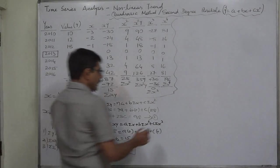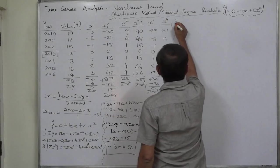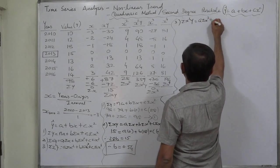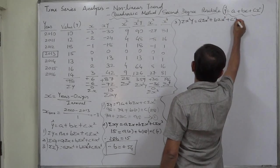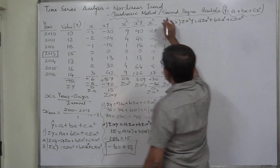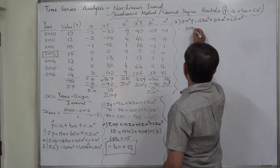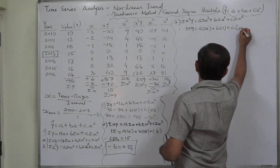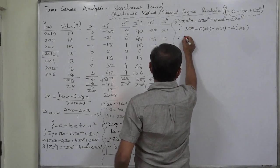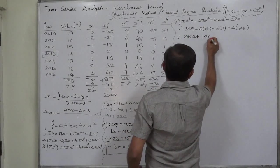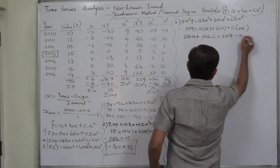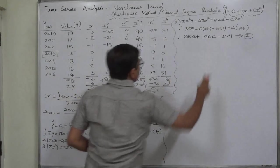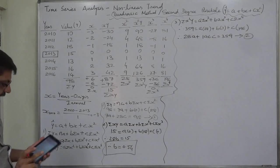Now let's use the third normal equation: sigma x squared y equals a sigma x squared plus b sigma x cubed plus c sigma x raised to 4. Substituting: 359 equals a times 28 plus b times 0 plus c times 196. Therefore we have equation 2: 28a plus 196c equals 359. By solving equations 1 and 2 simultaneously, we can find the values of constants a and c.